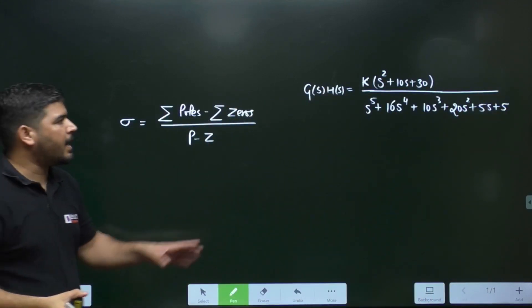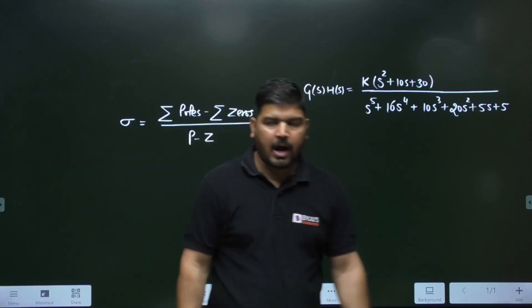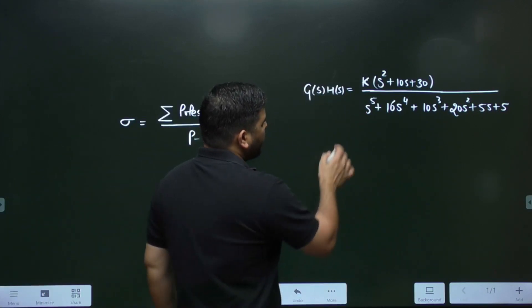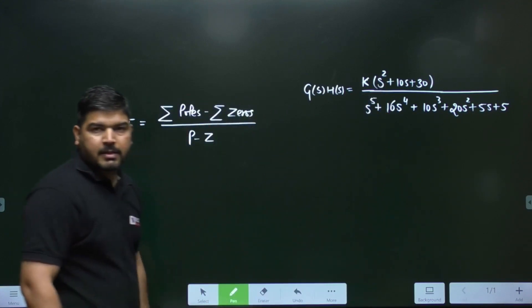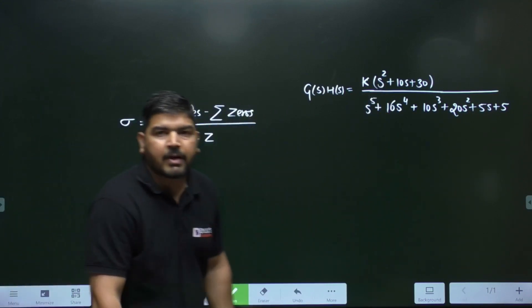So this is my G(s)H(s) and I need to find the centroid point. How to find the centroid point? If you go into the calculation of pole location and zeros location, it will be very difficult to solve.